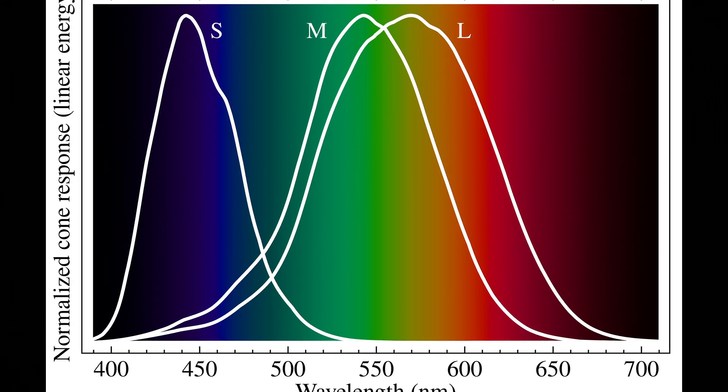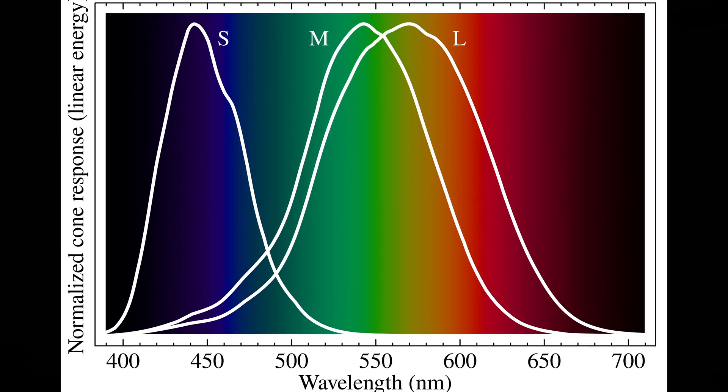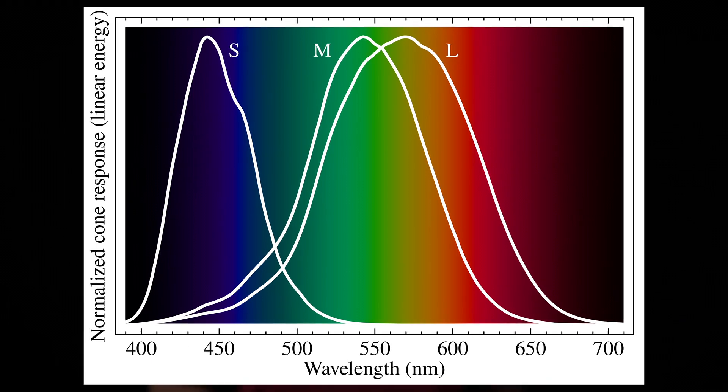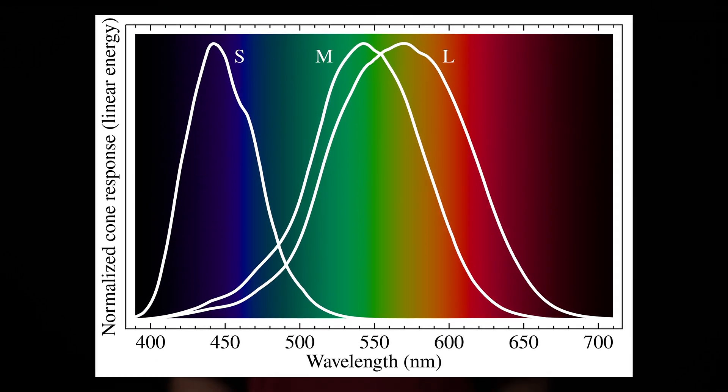That raises the question — why red, green, and blue? Why not some other colors? The simple answer is that those colors mirror how our eyes work. Using those three colors is an efficient way to model the way our eyes work and therefore color, in instances where the intended end product is for human consumption. Our eyes have three types of cells responsible for color vision: the L, M, and S cone cells — standing for long, medium, and short — describing the wavelength those cells are sensitive to, corresponding to red, green, and blue light respectively.